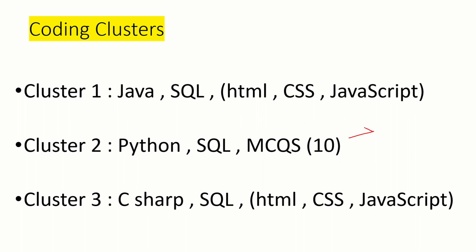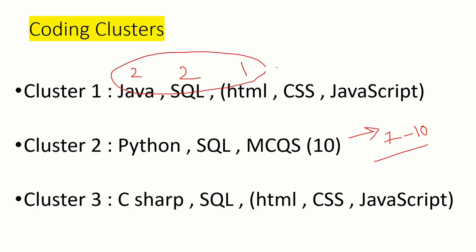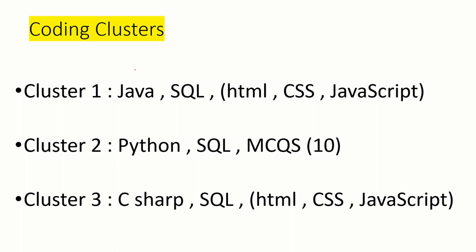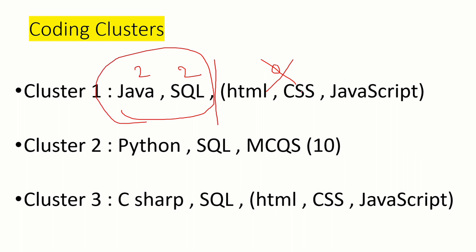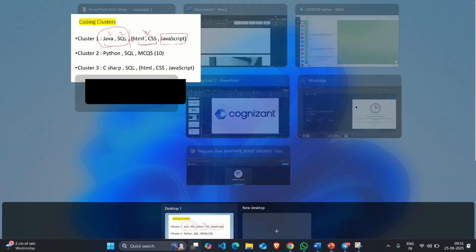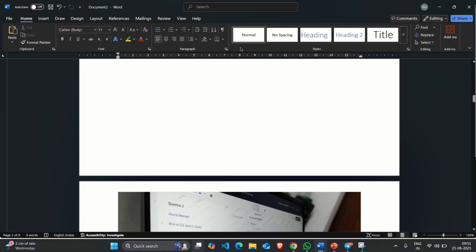For the Python cluster, students receive 10 MCQ questions and need to solve at least 7 to 10 of them. Regarding the overall cutoff: if you solve two Java questions, two SQL questions, and one HTML/CSS question, there is a high chance of receiving the GenC Next role. Some students completed two Java, two SQL, and zero HTML/CSS — that is fine too, since Java and SQL are highly considered. Try to complete HTML and CSS as the questions are simple; JavaScript is the difficult part.